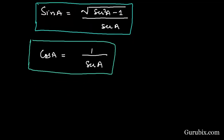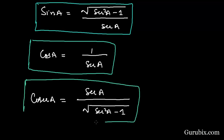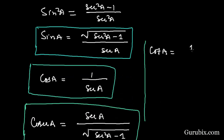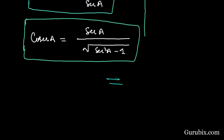Now we shall write cosec A = sec A / √(sec²A - 1), because cosec A is just the reciprocal of sin A. This is how we can write cosec A in terms of sec A. And cot A = 1/√(sec²A - 1). This is the solution of the question. Thank you.